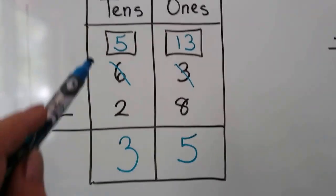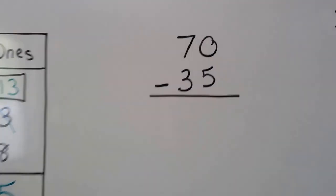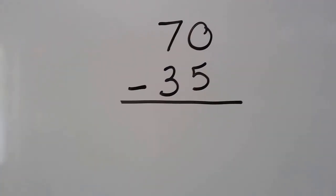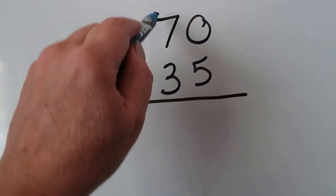So let's try doing it without the box with the tens and the ones written for the columns. Here we have 70 minus 35. We can see the 5 is greater than the 0, so we need to regroup.